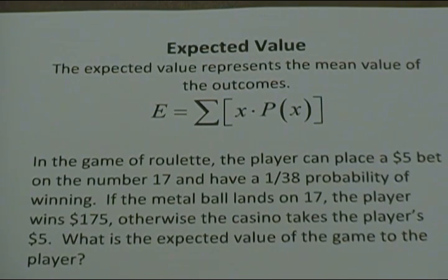If the metal ball lands on 17, the player wins $175. Otherwise, the casino takes the player's $5. What is the expected value of the game to the player?